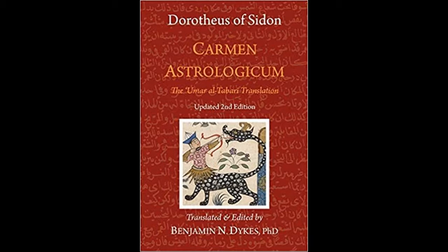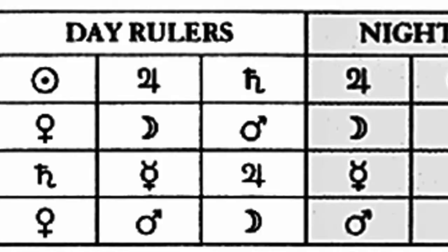In this system each triplicity has two rulers which exchange priority according to whether the chart is diurnal or nocturnal, plus a third ruler which is common to both sects. And you can see here the classical scheme of triplicity rulers.